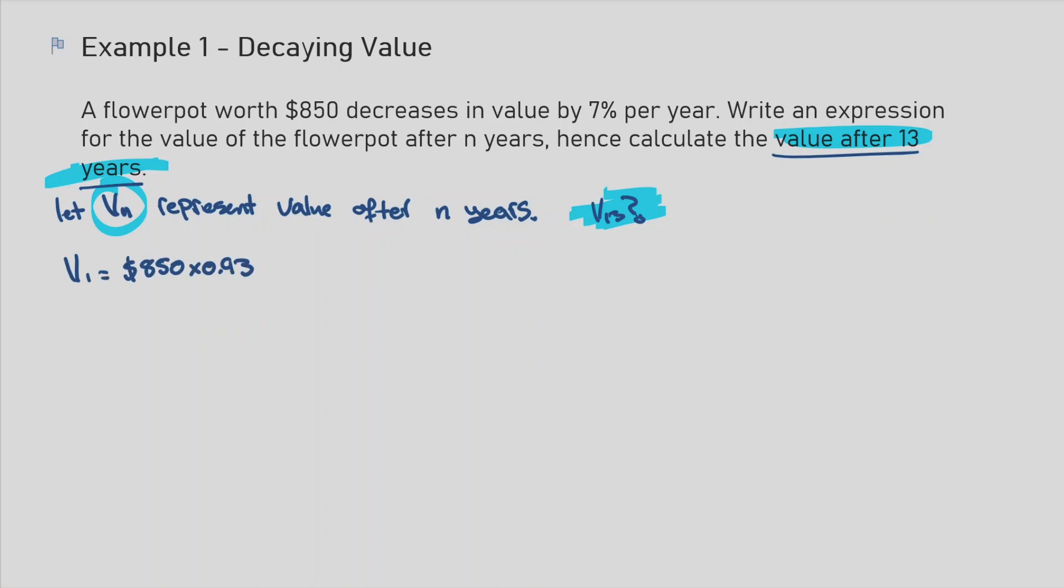So our first term of our geometric sequence would be 850 multiplied by 0.93. And that is because we are decreasing by 7% per year. So that is like saying we're finding 93% of what it's worth because we've taken off 7%. So that's where that 0.93 comes from.